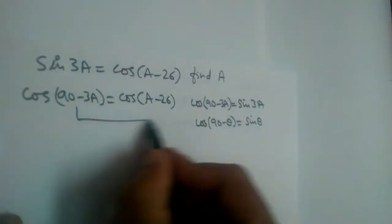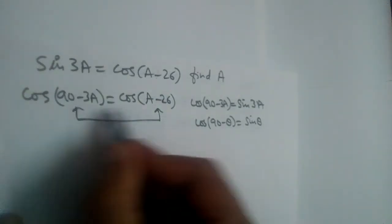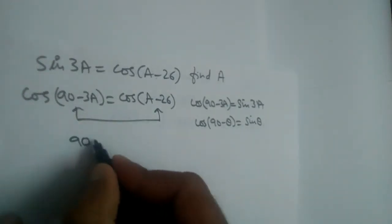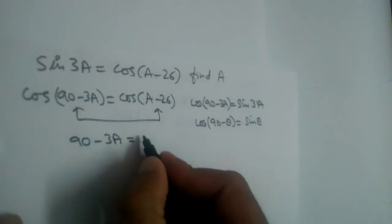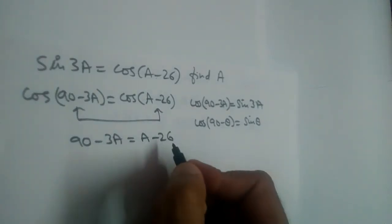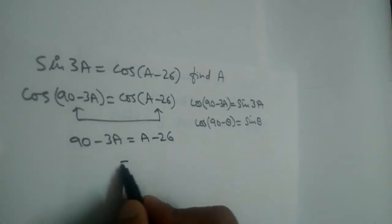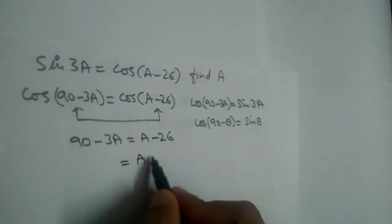That means 90 - 3a should equal a - 26. So bring the a values to one side. This 3a goes on the other side and becomes plus 3a.